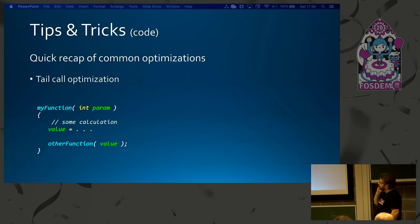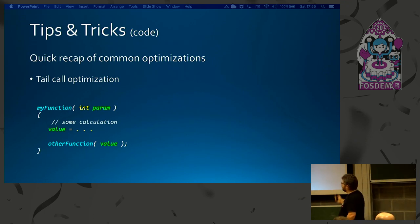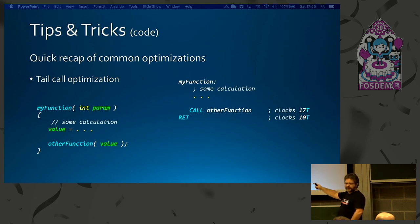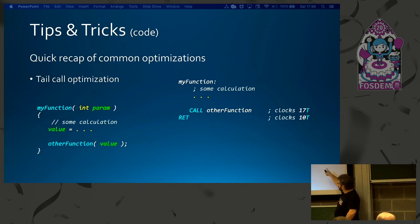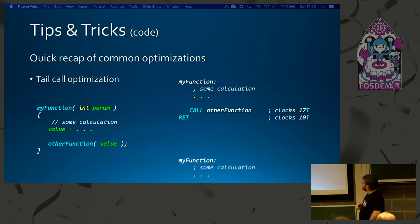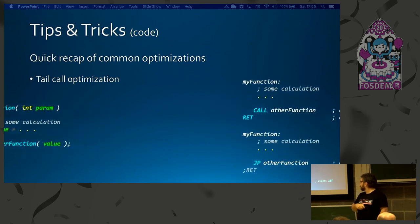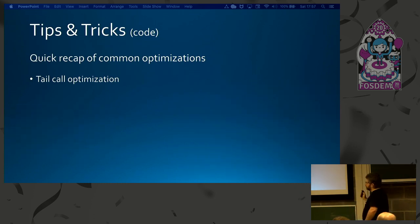Here's a quick recap of common optimizations with a comparison between C and assembly. Tail call optimization: if the last thing you do is call another function, instead of calling and returning and then returning again — which costs extra clock cycles — you can comment out the return statement and just jump, because that function will return for us. We saved 17 clock cycles just from that one optimization.